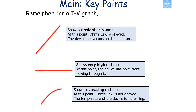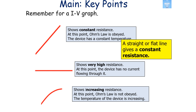To summarise what we know about current potential difference graphs: a straight line shows constant resistance, meaning Ohm's law is being obeyed and the device has a constant temperature. A flat line shows a very high resistance with no current flowing through the device. A curving line shows increasing resistance, meaning Ohm's law is not obeyed and the temperature of the device is increasing. So a straight or flat line gives constant resistance, while a curving line gives changing resistance.